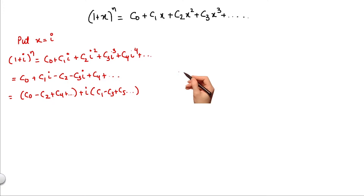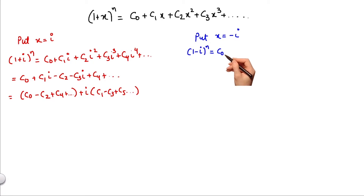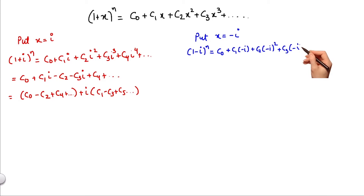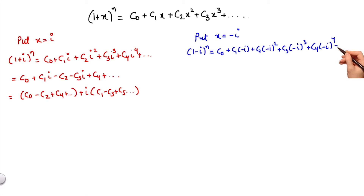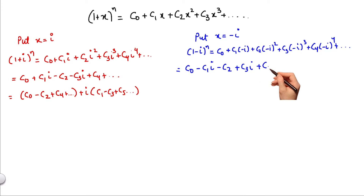Now let's put x equal to minus iota and see what happens to this expansion. It becomes (1−iota)^n equals c0 + c1·(−iota) + c2·(−iota)² + c3·(−iota)³ + c4·(−iota)⁴ and so on. Simplifying, we get c0 − c1·iota − c2 + c3·iota + c4 and so on.